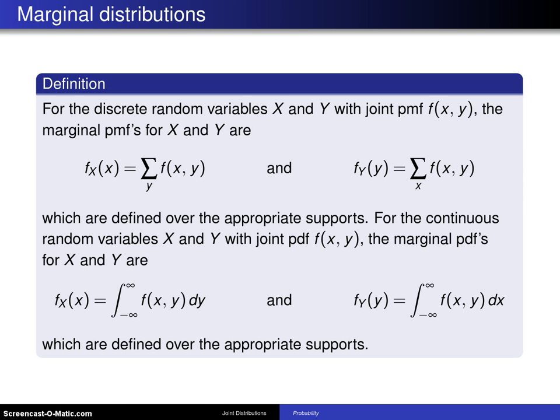On the next slide, here is the definition. For the discrete random variables x and y with joint probability mass function f(x,y), the marginal probability mass functions for x and y are f_X(x), which is the sum over all y values of the joint probability mass function.